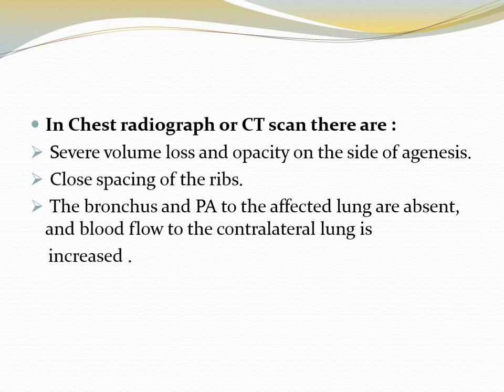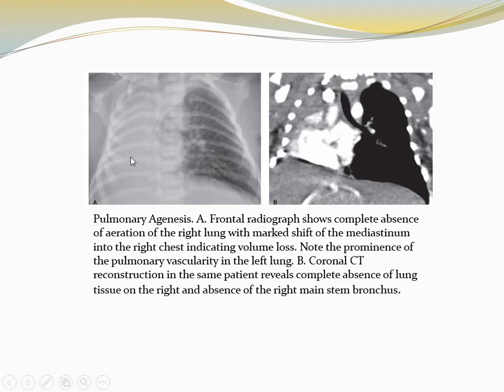On chest radiograph or CT scan, there is severe volume loss and opacity on the side of agenesis, close spacing of the ribs, and the bronchus and pulmonary artery to the affected lung are absent, with increased blood flow to the contralateral lung. Like in this case, there is complete loss of aeration of the right lung and mediastinal shift to the right. The vascularity of the contralateral side is increased. Coronal CT reconstruction of the same patient reveals complete absence of the right lung and the right main bronchus is absent.